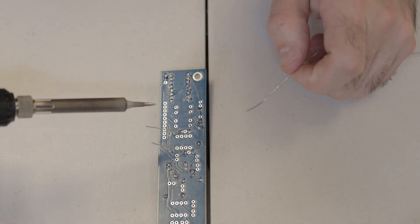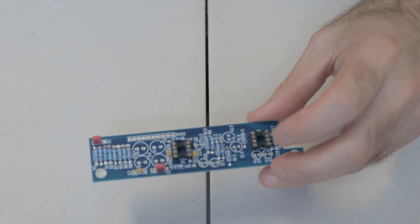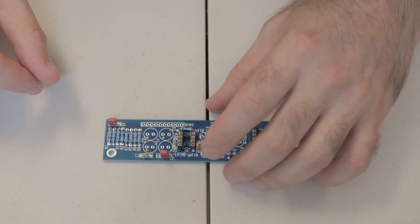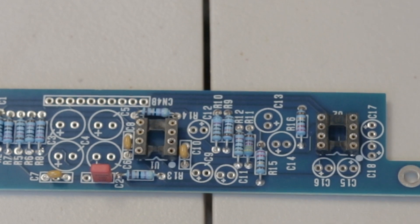And then next up are these IC sockets. There's two of them and you want to make sure that they are put in place in the right orientation. So there's this little kind of divot that shows which way they should be placed to match up on the silkscreen PCB.